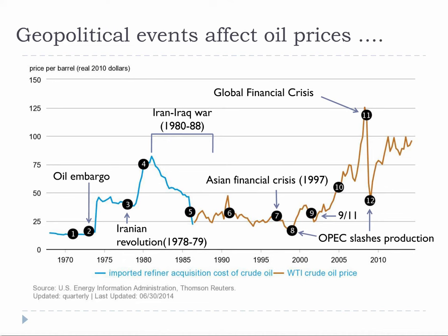Number six was when Iraq invaded Kuwait. Number seven was the Asian financial crisis. Number eight was when OPEC cut production targets by nearly 2 million barrels per day. Number nine were the terrorist attacks on 9-11. Number ten was another case of low spare capacity. Number eleven was the 2008 global financial collapse. And number twelve was when OPEC cut production targets by about 4 million barrels per day.